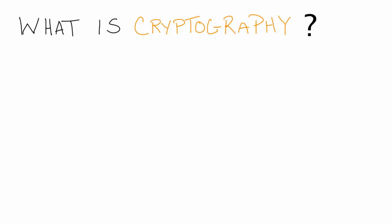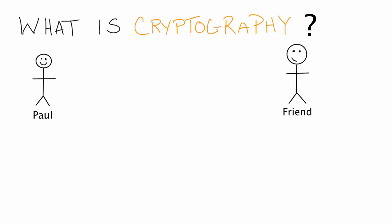So let's say that we've got some person. Let's just go ahead and name this person Paul, since that's a pretty neat name. And then let's say that Paul has a friend. Let's pretend like Paul and his friend are on different sides of the world, but Paul has an important message to send his friend. But because Paul is on the other side of the world, he can't just hand his friend this message. So now let's pretend like this message that Paul has has some secret information that he only wants his friend to know about and nobody else.